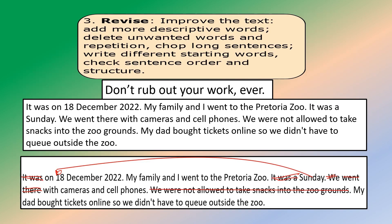Step three: revise. Remember, you are required to know these steps off by heart: one plan, two draft, three revise, four edit, and five publish. We're in step three now. Imagine you are a teacher looking at a kid's work, finding ways to make it much better. Improve the text: add more descriptive words, delete unwanted words and repetition, chop long sentences, write different starting words, check sentence order and structure. Don't rub out your work.